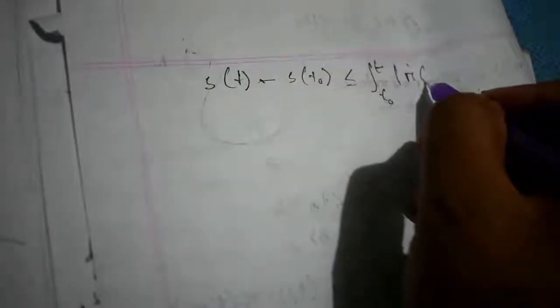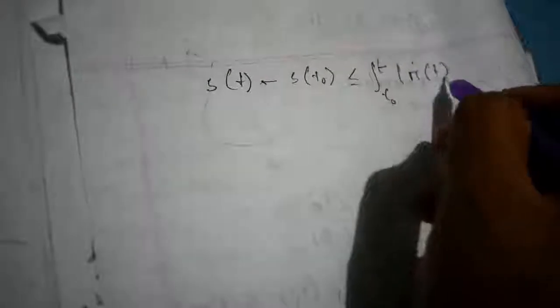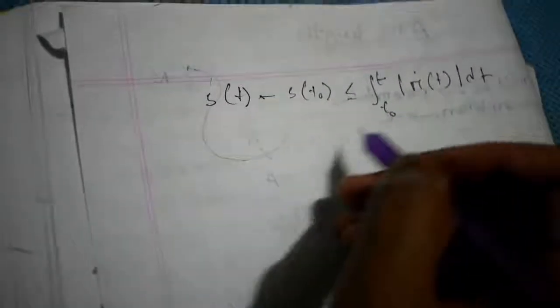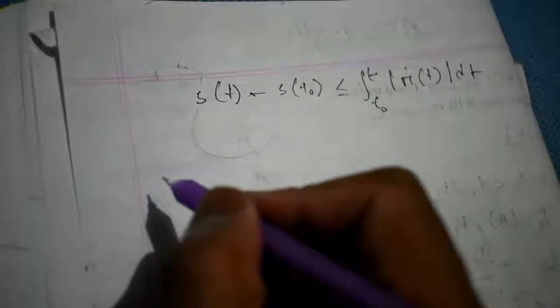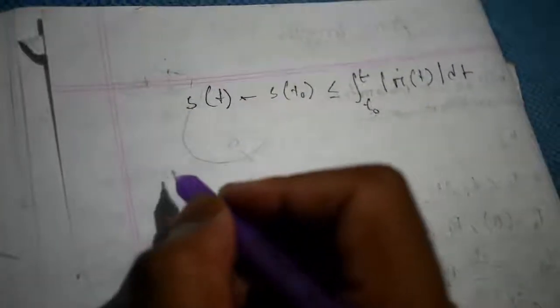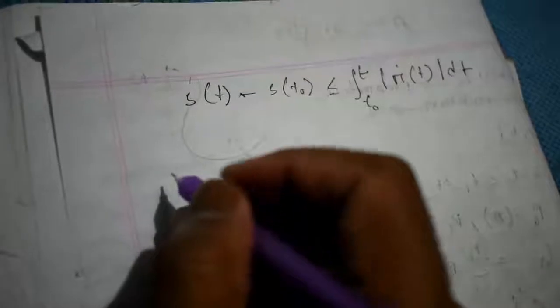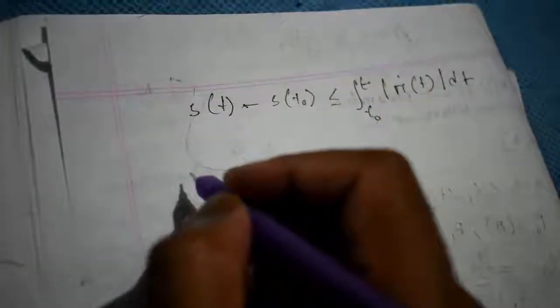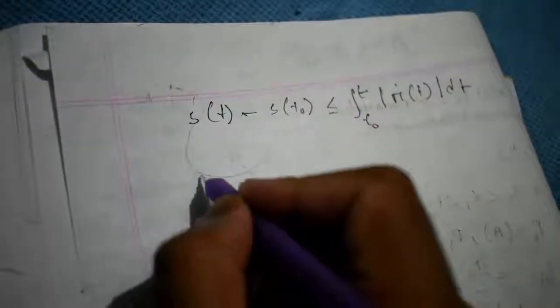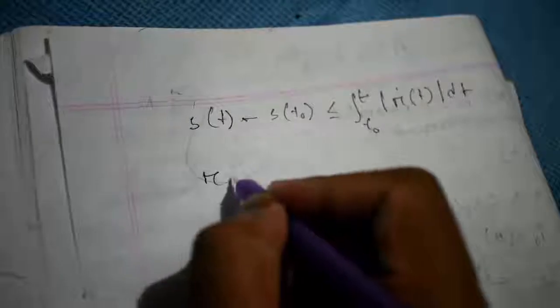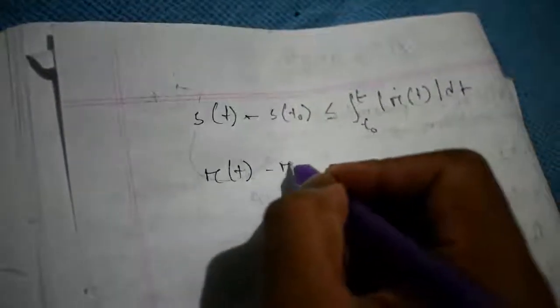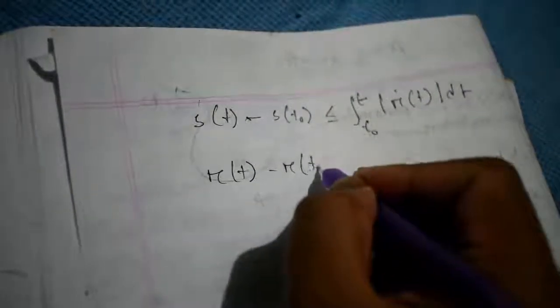Again by the definition of arc length we have |r(t) - r(t₀)|.